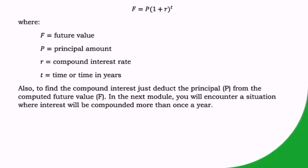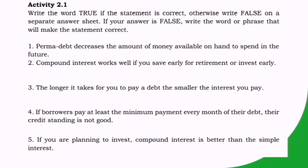The formula to find the future value in compound interest is: F = P × (1 + r)^t, where F equals future value, P equals principal amount, r equals compound interest rate, and t equals time in years. To find the compound interest, just deduct the principal P from the computed future value F.